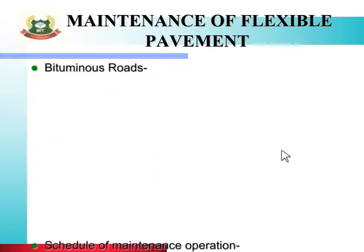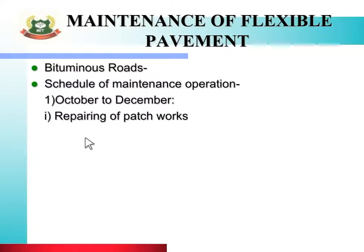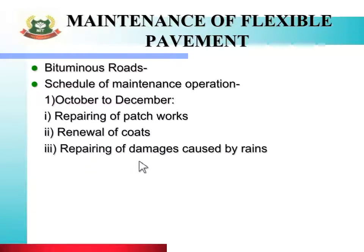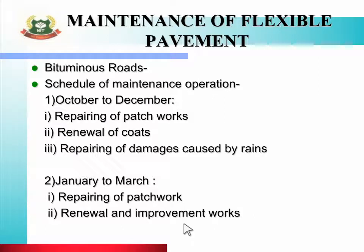Toh students, dekhte hain schedule of maintenance operation of bituminous road. Is schedule mein sabse pehle aata hai October to December — is period mein: first, repairing of patchworks; second, renewal of coats; third, repairing of damages caused by rain. Second schedule is January to March — is mein aata hai repairing of patchwork, renewal and improvement work; patchwork repairing and renewal and progress of the road ka kaam is period mein kar sakte hain. So this is the complete part of failure of flexible pavement; in the next slide we will see failure of rigid pavement.